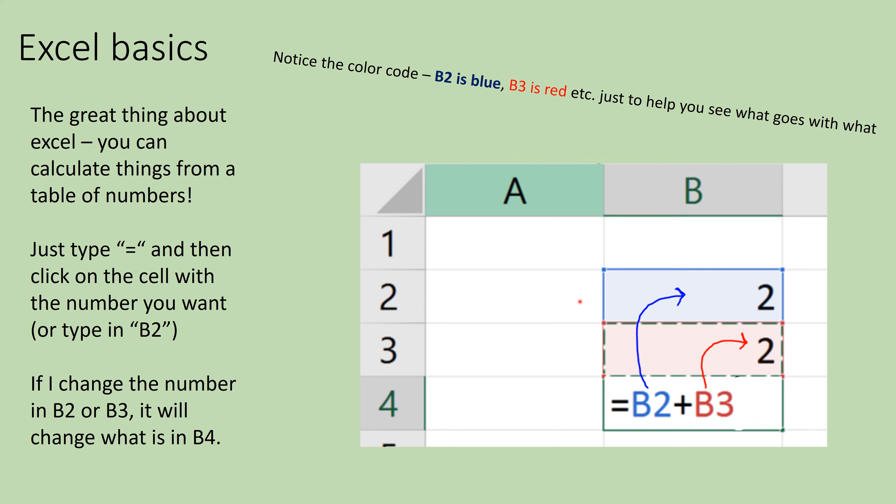You can also calculate things from a table. So here, instead of saying equals two plus two, I'm saying equals B2. So you look at B2, it's grabbing the number out of this cell, plus B3. So here's B3 and that'll give you two as well. Notice how everything is color coded. So B3 is red and this cell is red. B2 is blue. And you can either type in B2 or you can just use your mouse and left click to select the cells that you want to use.